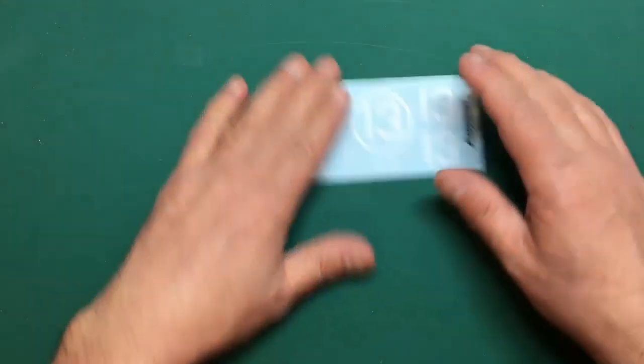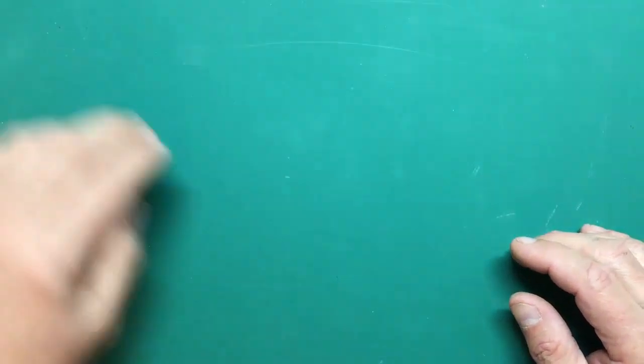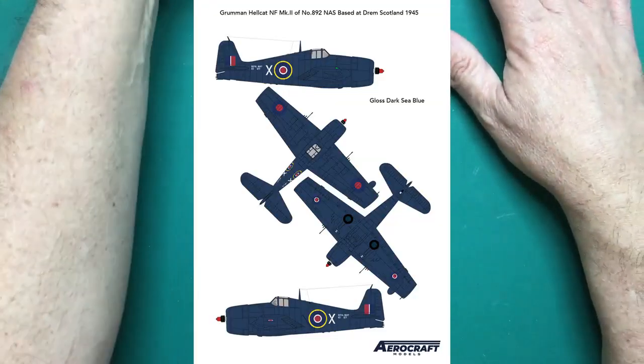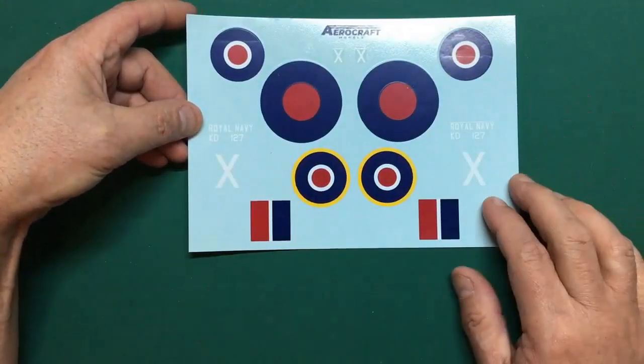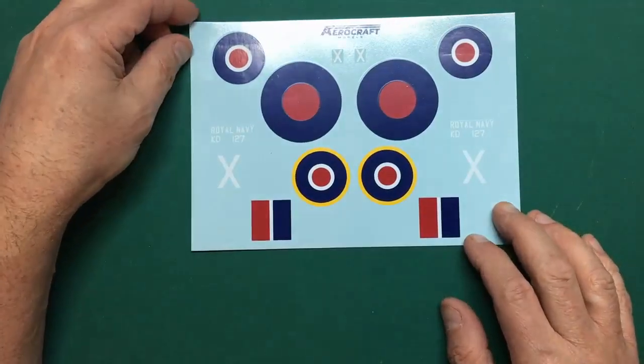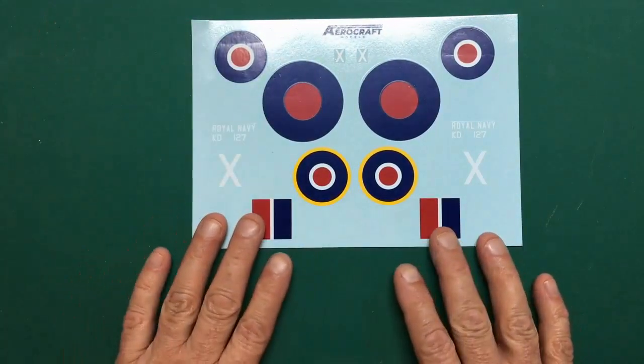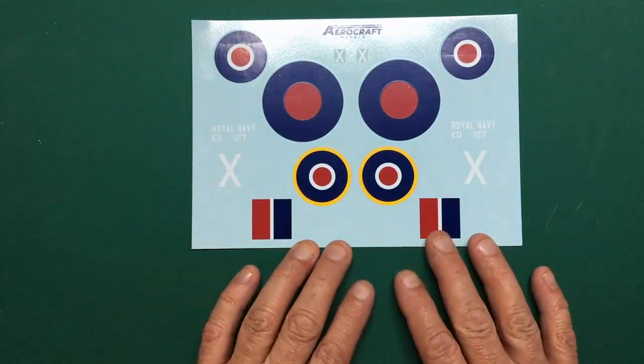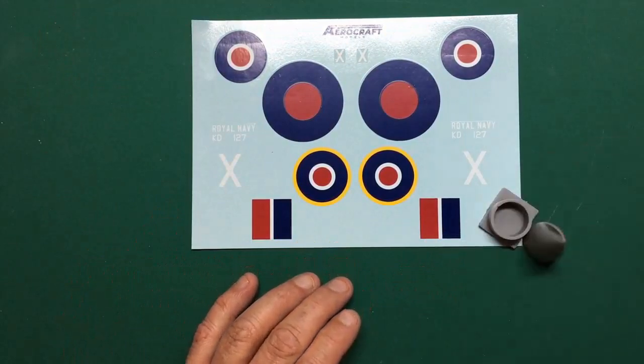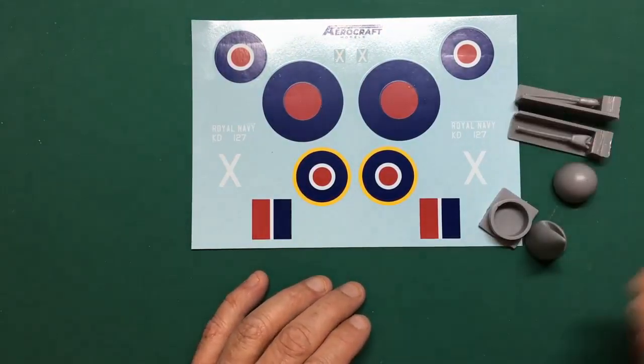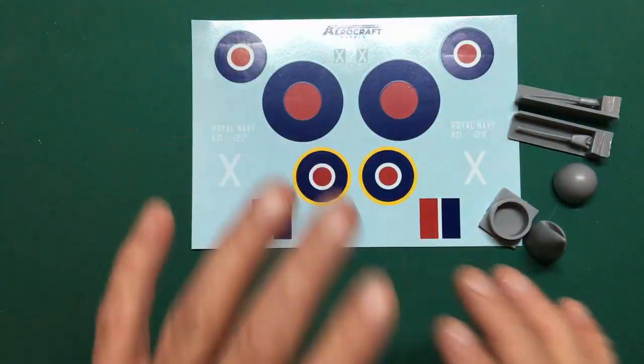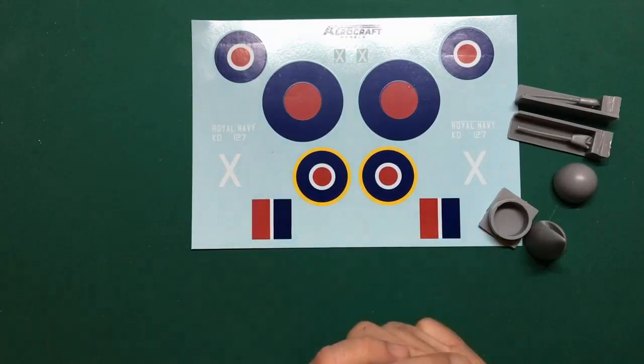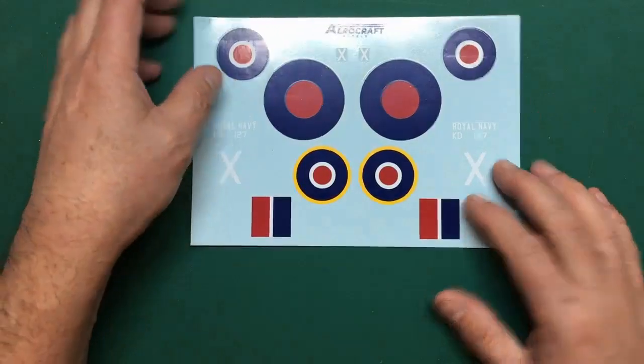Next one is KD-127. This is a Royal Navy version. As you can see we've got some lovely red roundels, almost looks like a decal set for a Spitfire. With this one again you're going to use the pod, and with this one you're going to use the guns. These parts and these decals will enable you to make an accurate model of KD-127 of the Royal Navy.